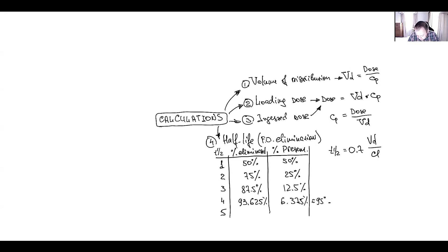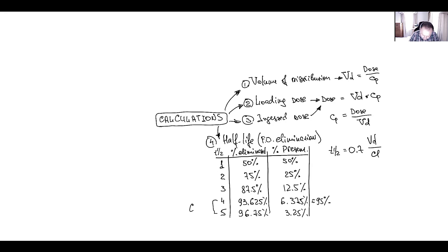We can make the approximation that around 95% of medication is eliminated after four half-lives. After five half-lives: 96.75% eliminated, 3.25% remaining. This means we are able to reach steady-state concentration after four or five half-lives, assuming we reach approximately 95–100% of steady-state concentration.